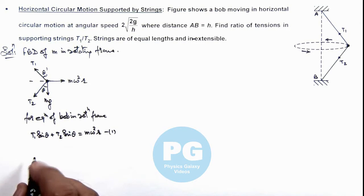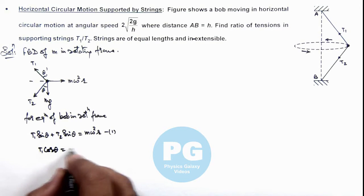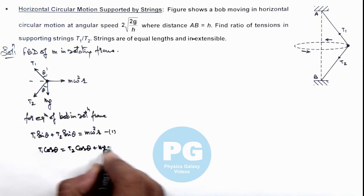And in the vertical direction we can write: T₁cosθ = T₂cosθ + mg. That is the second equation.